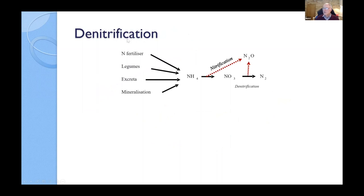So we've got denitrification as the process we talked about, where it can be any source of nitrogen going in: fertilizer, legumes, dung and urine, mineralization from the soil. When we nitrify that to nitrate, then some of that can then become either dinitrogen or nitrous oxide gas. Nitrous oxide is a problem because it's a greenhouse gas.